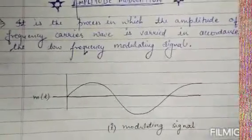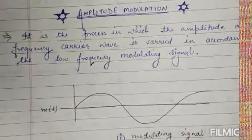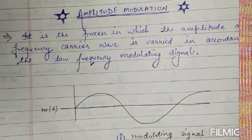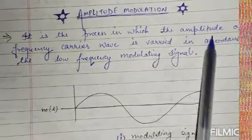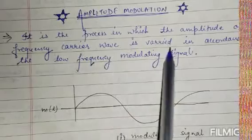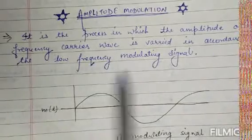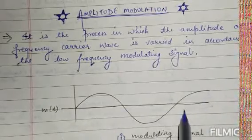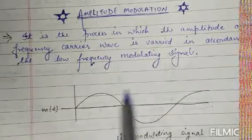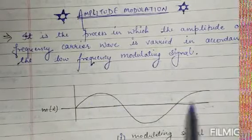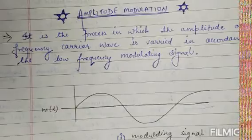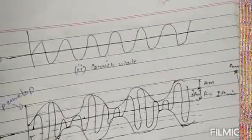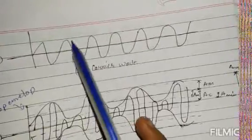Amplitude modulation is a process in which the amplitude of a high-frequency carrier wave is varied in accordance with the low-frequency modulating signal. You can see this in the waveform diagram — the modulating signal and the carrier wave are shown, and the resulting modulated signal shows amplitude variation.